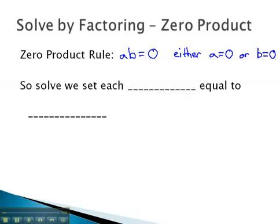So if we have factors that equal 0, to solve, we set each factor equal to 0. Let's take a look at some examples where we can set factors equal to 0 to find out what x equals.